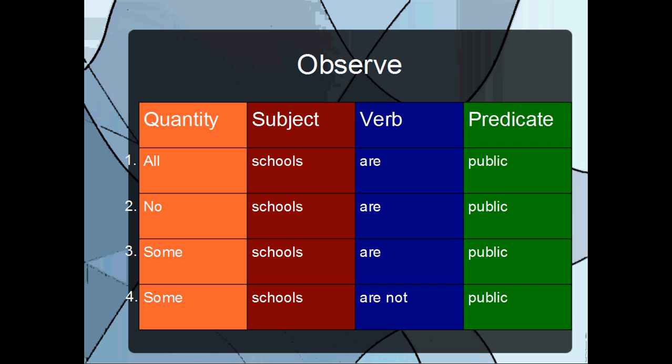For the first proposition, you have all schools are public. It's basically saying every school falls under the category public. Schools entirely falls. The category schools entirely falls under the category public. That first proposition is an affirmation. So the first proposition has a positive quality.